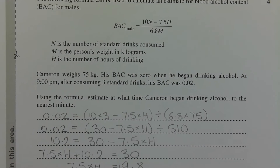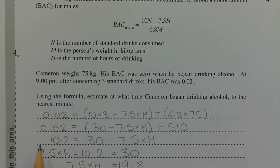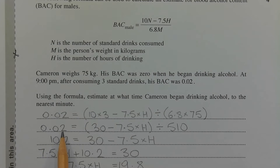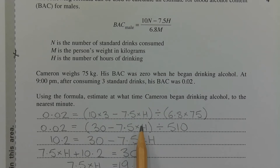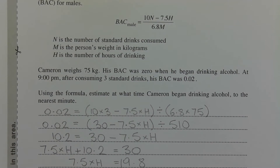So 0.02 is equal to (10 times 3 minus 7.5 times H) divided by (6.8 times 75). The equation can be written in a more simplified form: 0.02 equals (30 minus 7.5H) divided by 510.